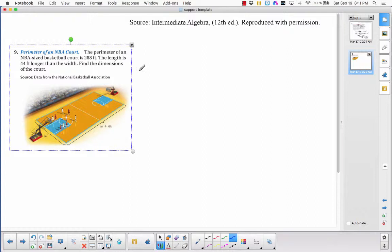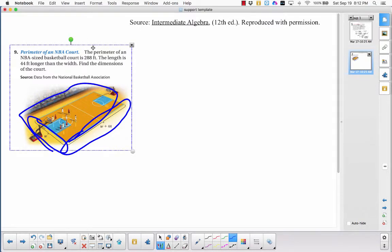Okay, so they say that the width is W and the length is W plus 44. And then they say the perimeter, that's the whole way around it, is 288.